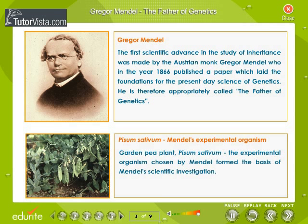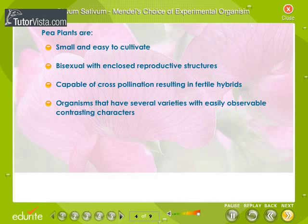Garden pea plant, Pisum sativum. The experimental organism chosen by Mendel formed the basis of his scientific investigation. Mendel's success in hybridization was due to his careful choice of the experimental organism, the garden pea, Pisum sativum.